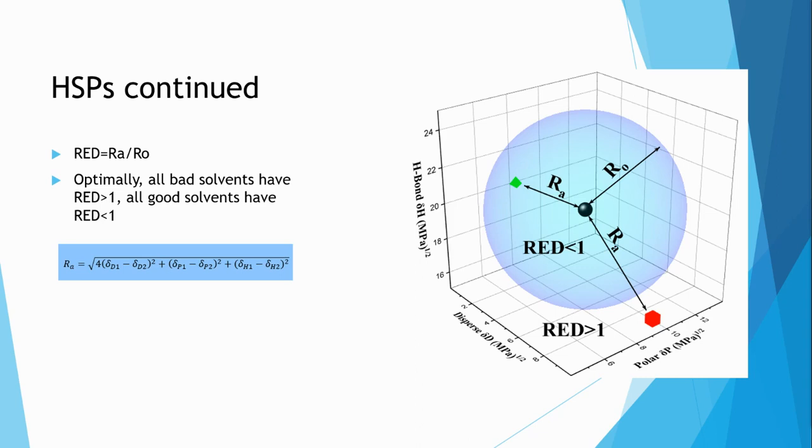The Ra value gives the radius of the sphere of that species. The relative energy distance, or red, is defined as Ra divided by Ro. In an optimal HSP model,